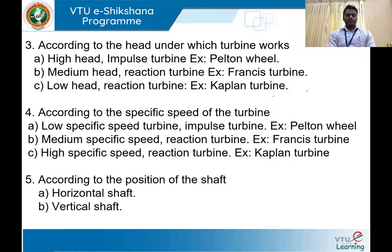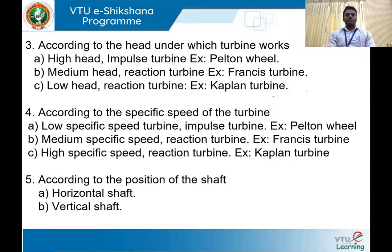Based on specific speed, turbines are classified as low specific speed, medium specific speed, and high specific speed. Based on the position of the shaft, the turbine shaft can be mounted either horizontally — parallel to the ground surface — or vertically, in the Y direction.